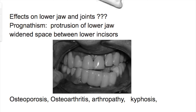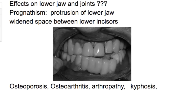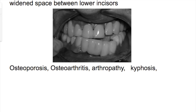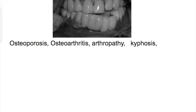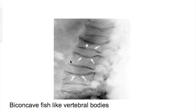What are the effects on joints and bones? There is osteoporosis, osteoarthritis, arthropathy, and kyphosis. And what is the X-ray feature on the spine? There are biconcave fish-like vertebral bodies.